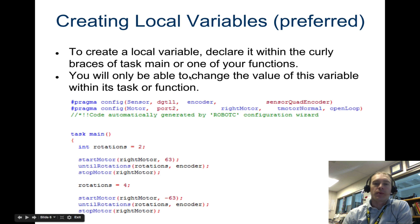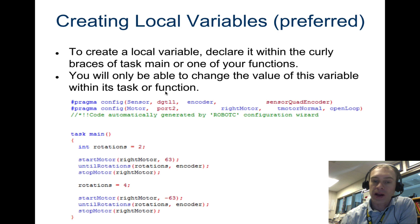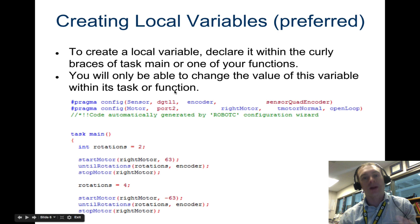So here's an example of a local variable, and if you want to go back to look at that definition, you can always rewind this. A local variable declares it within the curly braces of task main or one of your functions. You can only change the value of this variable within the task or function. And right now we've only looked at one task and function, so it's not going to make too much sense yet, but you might want to come back to this and take a look at it after you've seen functions.